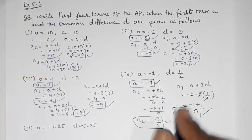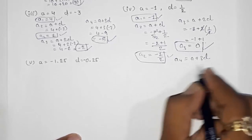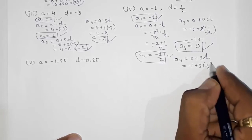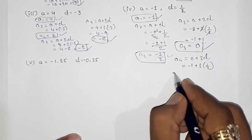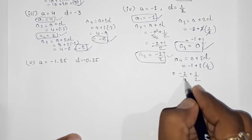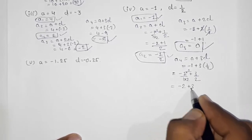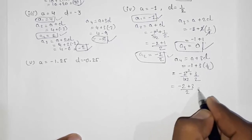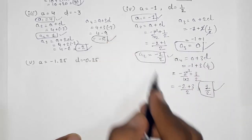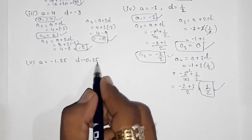For a4 = a + 3d = -1 + 3×(1/2). We find the LCM: (-2 + 3)/2 = 1/2. So our fourth term is 1/2. This way we can find out the four terms: -1, -1/2, 0, 1/2.